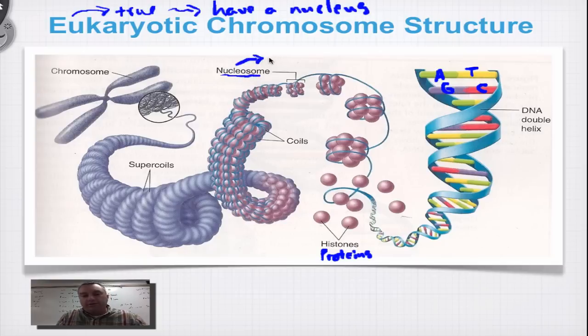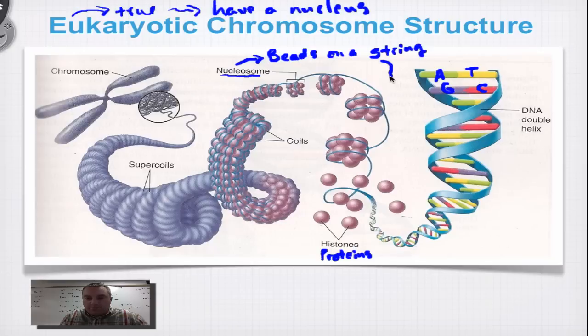Oftentimes, you're going to read that nucleosomes are described as beads on a string. And you want to remember that it's eight histones, H-I-S for histones, and two DNA loops. You see here, right? Here's a nucleosome. One, two, three. There's a fourth one hidden behind here. Five, six, seven, eight histones. One loop, two loops. That's one nucleosome.